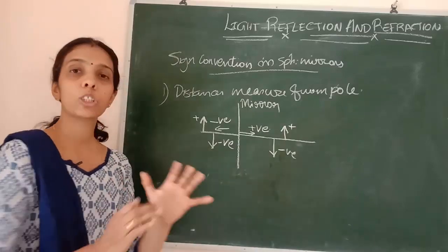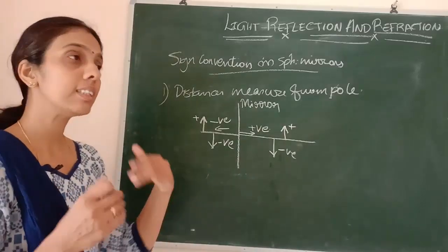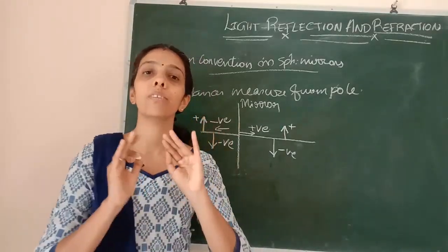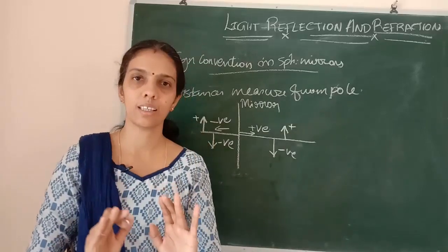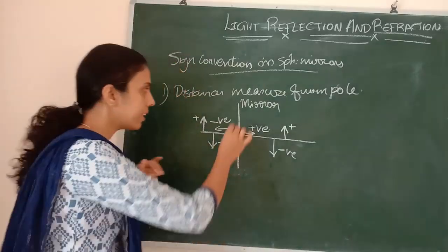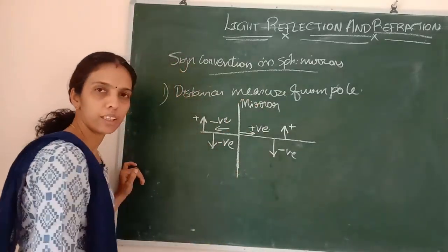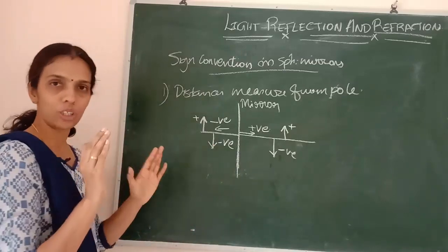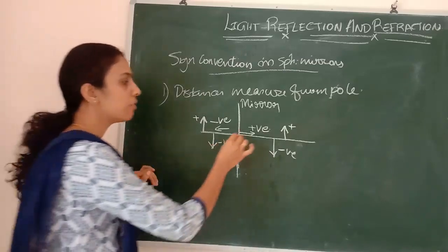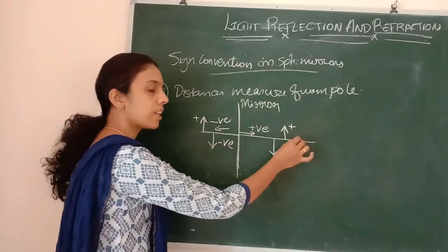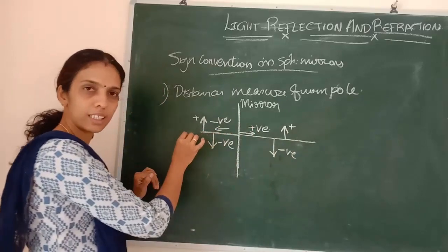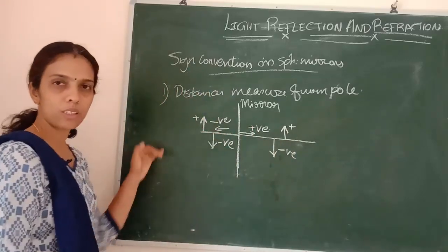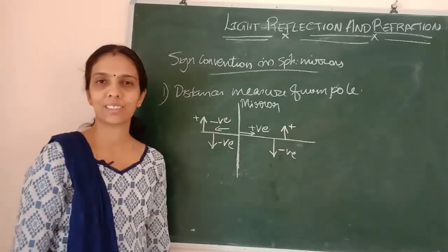This is the sign convention. Usually children say it is very difficult, but it is very easy. The mirror position we consider as origin. From origin to the right side is positive, left side is negative, upward direction is positive, downward direction is negative.